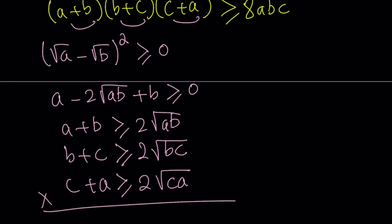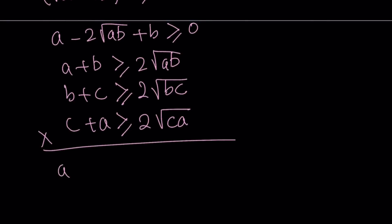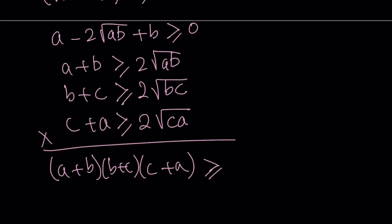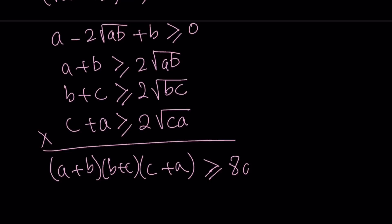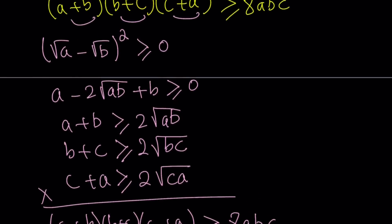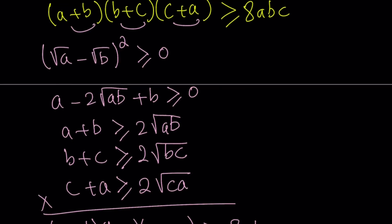We now have three inequalities all in the same direction. Everything is positive, so we can multiply them. On the left-hand side, we get (A plus B) times (B plus C) times (C plus A). On the right-hand side, 2 times 2 times 2 equals 8, and √A times √A equals A since A is positive, giving us 8ABC on the right-hand side. That is exactly the inequality we were trying to prove — case closed.